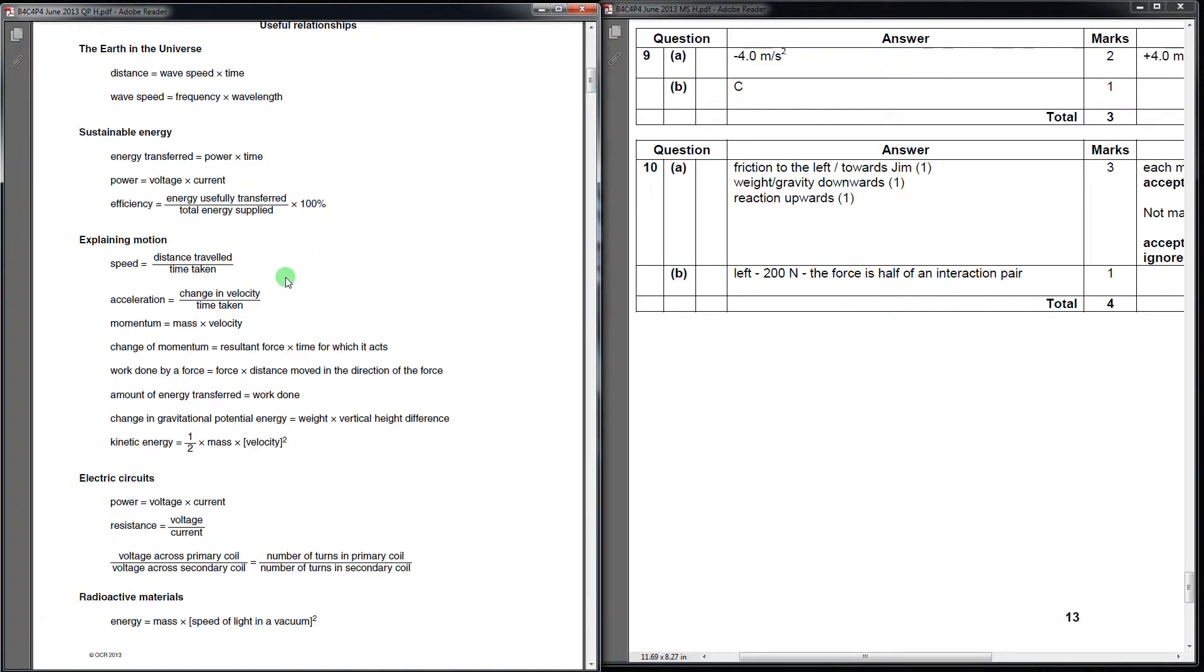We're trying to calculate acceleration, so we look down our list of things. For additional science, you should only be looking at the bottom half of this, the ones I've highlighted here. The sustainable energy and earth and universe were from year 10. You look down the list until you find an equation which has got acceleration in, because you're going to be calculating acceleration. There's only one with acceleration, so we must be using this one.